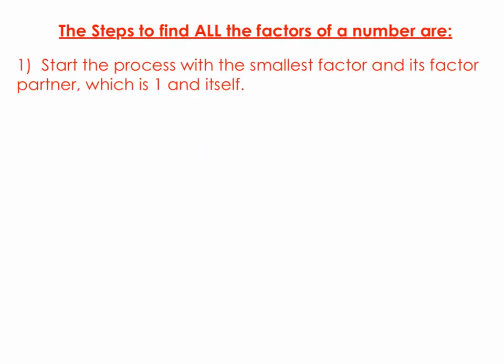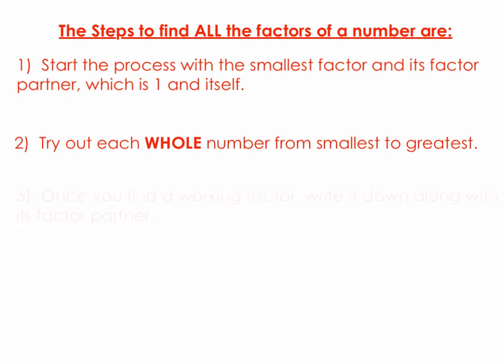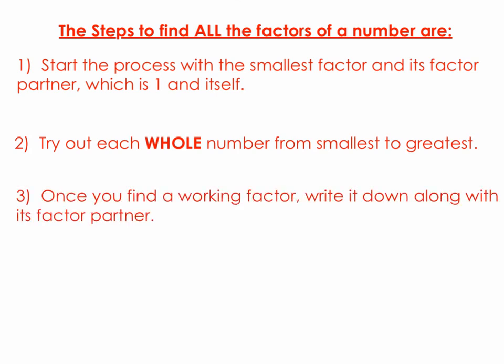Start the process with the smallest factor and its factor partner, which will always be 1 and itself. Try out each whole number from smallest to greatest. Once you find a working factor, always list it down along with its factor partner so you can minimize the work needed.